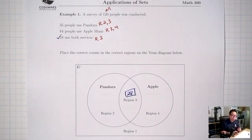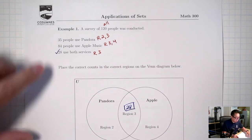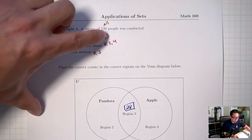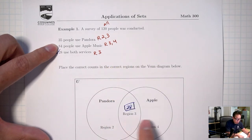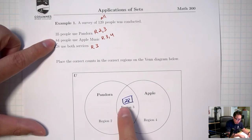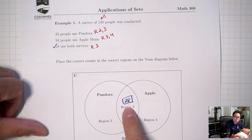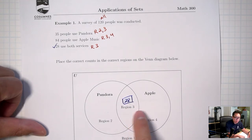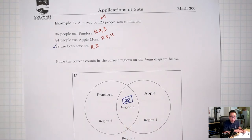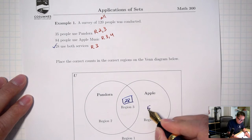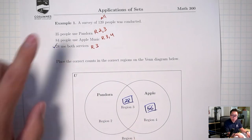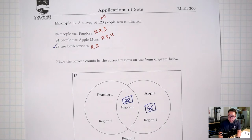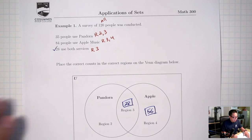Once you're done with clues that represent a single region, go to the clues that represent two regions. Let's do the 84 first. 84 is represented by regions 3 and 4, so regions 3 and 4 together should add up to 84. Right now region 3 is 28, so the math is 84 minus 28, which gives 56. Double checking: 56 plus 28 is 84. So 84 is good.